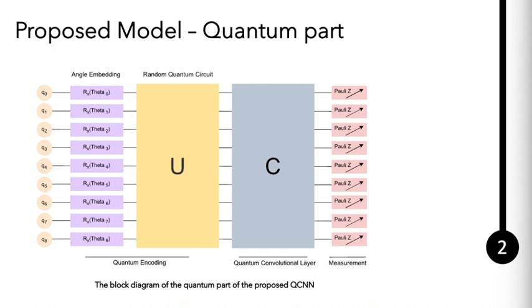After embedding input data into quantum state, a random quantum circuit, as shown in the figure here in front of you, is applied. This circuit consists of randomly chosen single qubit gates and controlled NOT gates, acts as a non-linear transformation, potentially enabling interaction patterns in the data.